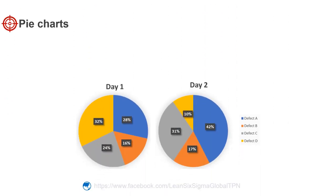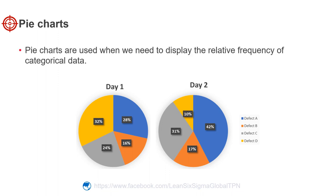We can use a pie chart. A pie chart shows the relationship of parts to a whole. Comparing the slices of the pie for defect B, day one appears to have nearly the same percentage of defect B as day two. Pie charts are used when we need to display the relative frequency of categorical data.